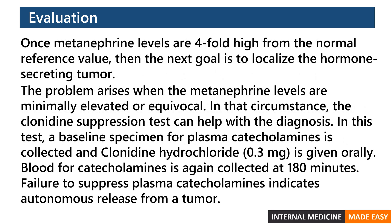Once metanephrine levels are fourfold above the normal reference value, the next goal is to localize the hormone-secreting tumor. When metanephrine levels are minimally elevated or equivocal, the clonidine suppression test can help. A baseline plasma catecholamine specimen is collected, clonidine hydrochloride is administered, and blood is collected again at 180 minutes. Failure to suppress plasma catecholamines indicates autonomous release from a tumor.